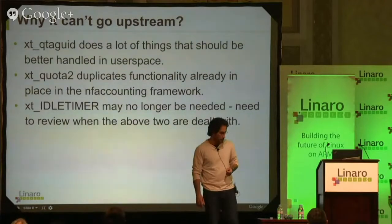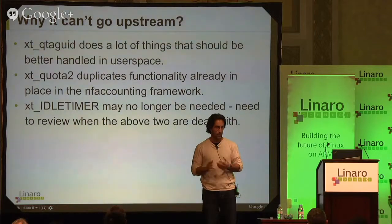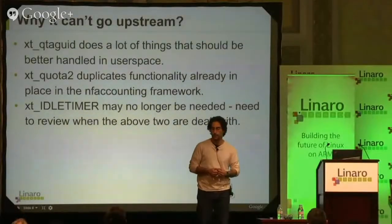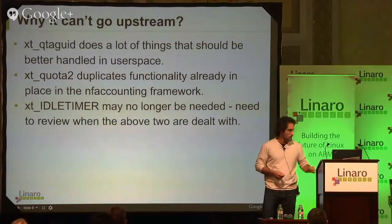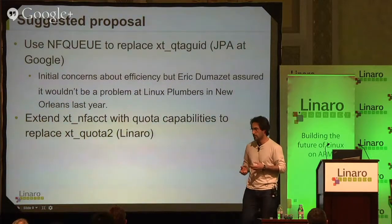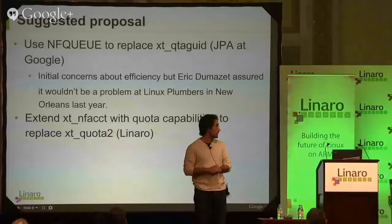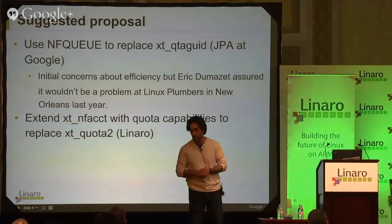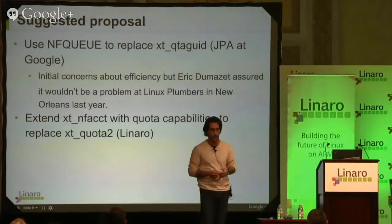All this works well, but it can't go upstream simply because it is duplicating a lot of functionality that is currently available. Maintainers looked at it, thought it was all great, but there's a way to do better. We can tweak some of the existing Netfilter entities currently upstream and achieve the same results. The idea was to replace everything in QtagUID with functionality provided by the NFQ Netfilter entity. The maintainer at New Orleans assured us that sending this much information to user space for processing would not impact the system, since that's exactly the reason why NFQ was invented.